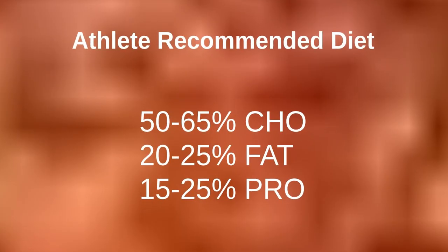Just a reminder of the athlete-recommended diet percentages. This is for someone regularly involved in physical activity — that's why the carb numbers are quite high at 50-65% carbs. Fat around 20-25% and protein, dependent on the amount of muscle damage you're doing, at around 15-25%. These are some good ballpark figures to try and work within.